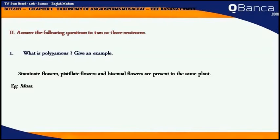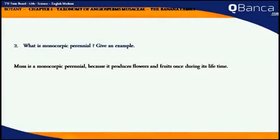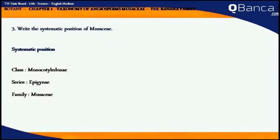What is polygamous? Give an example. Musa is a monocarpic perennial because it produces flowers and fruits once during its lifetime.